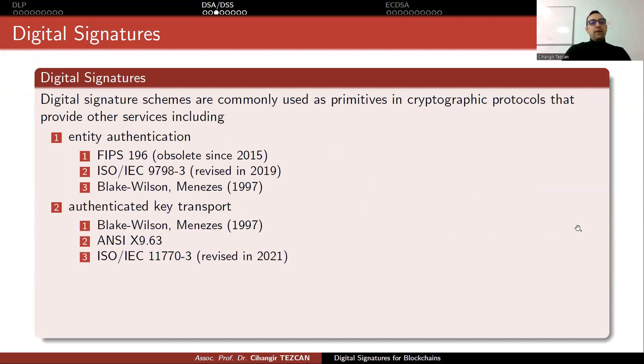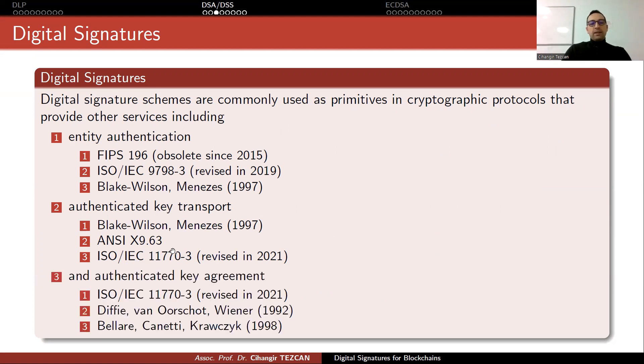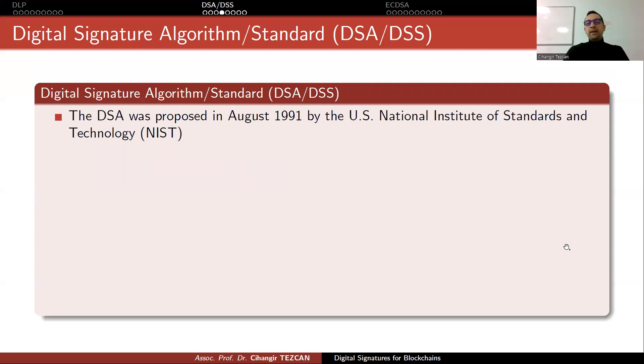Digital signature schemes are commonly used as primitives in cryptographic protocols that provide other services, including entity authentication, authenticated key transport, and authenticated key agreements. There are many standards for that. Some of them are very old, some of them are revised recently. You can use digital signatures for many different purposes. The basic and most used one, but nowadays we are trying to get rid of it, is the algorithm called digital signature algorithm or digital signature standard.